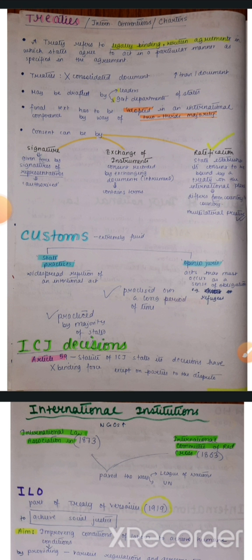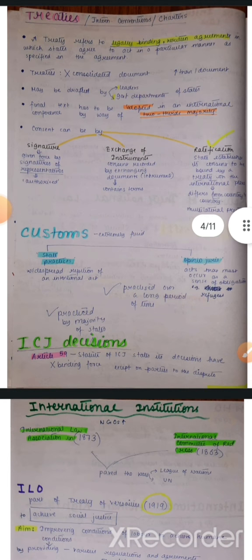Third, by way of ratification — yeh sabse well-accepted way of approving something hai. Ratification matlab: the state establishes its formal consent to be bound by a treaty in an international conference. It differs from country to country how they will accept a treaty — jaise ki president consent de sakte hain, ya phir unki legislature mein majority vote ke dwara. Ratification ek sabse zyada uniform way hai ek treaty ko accept karne ka.